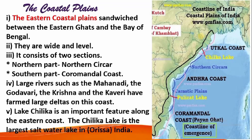The eastern coastal plains are located between the Eastern Ghats and the Bay of Bengal. If we compare with the western coastal plain, the eastern coastal plains are wider. The eastern coastal plain can be broadly divided into two parts: the northern Sarkar in the north, and the Coromandel coast in the south.